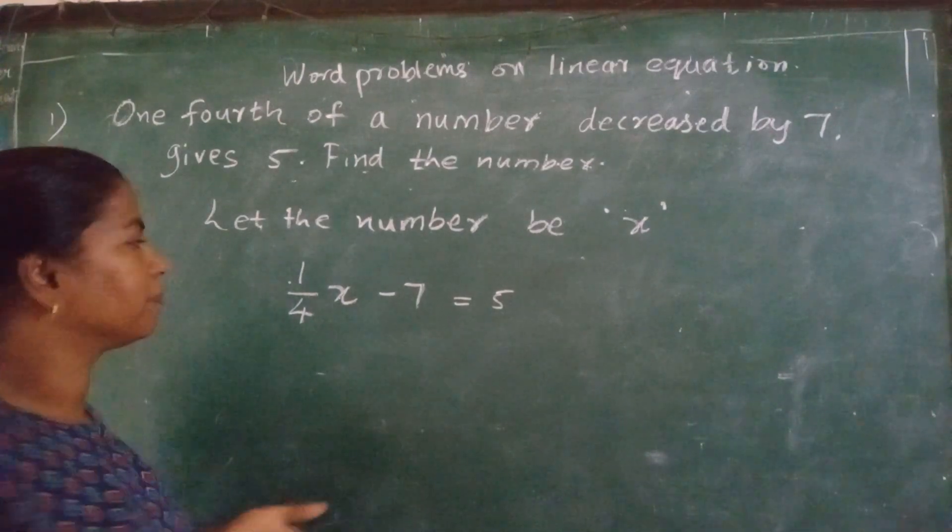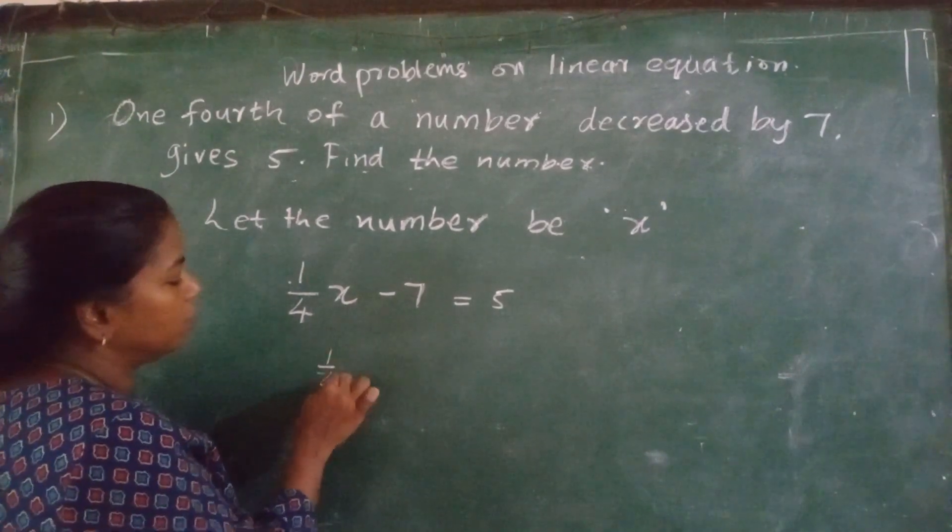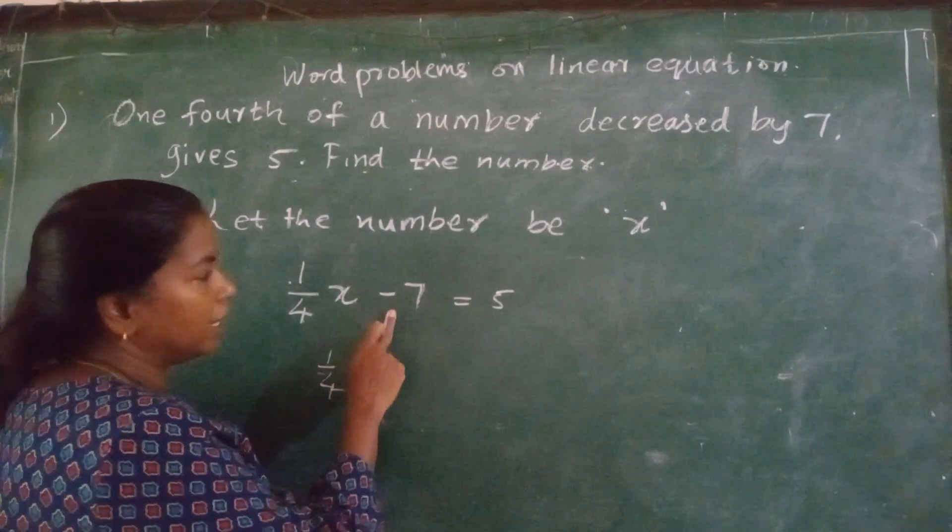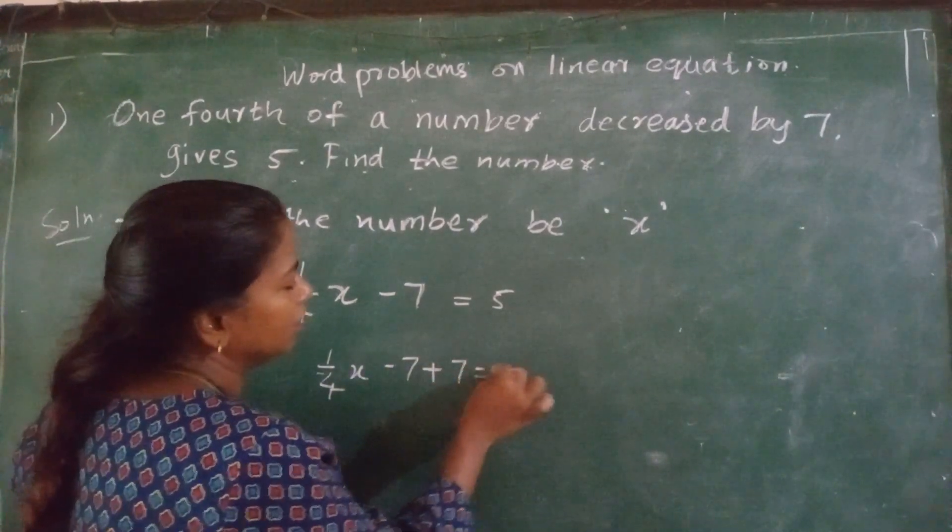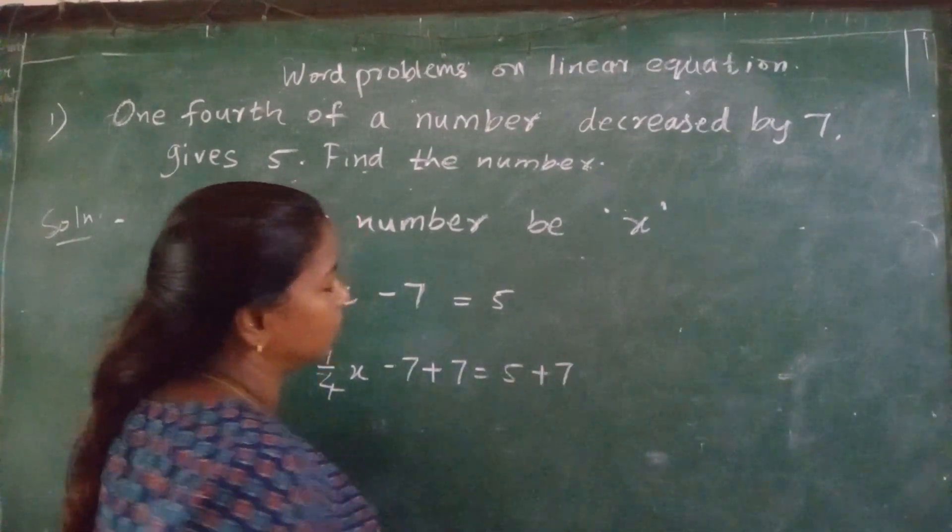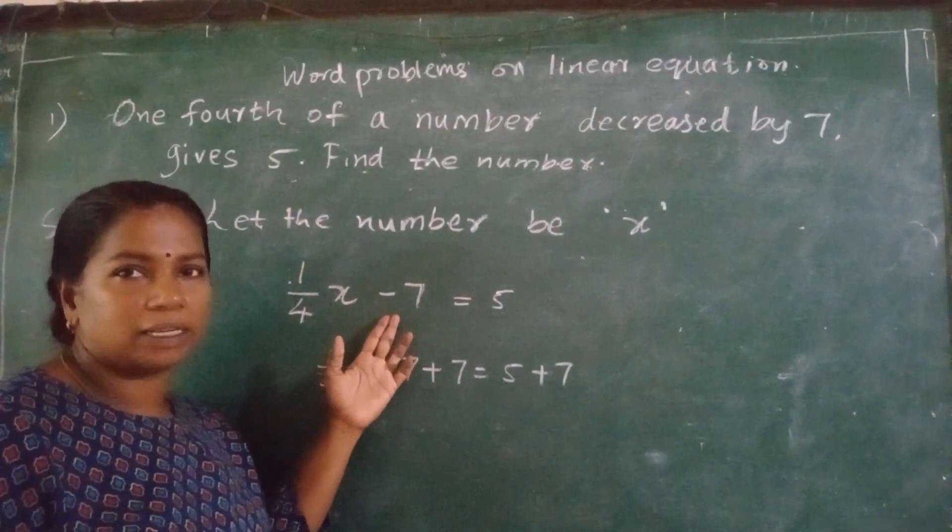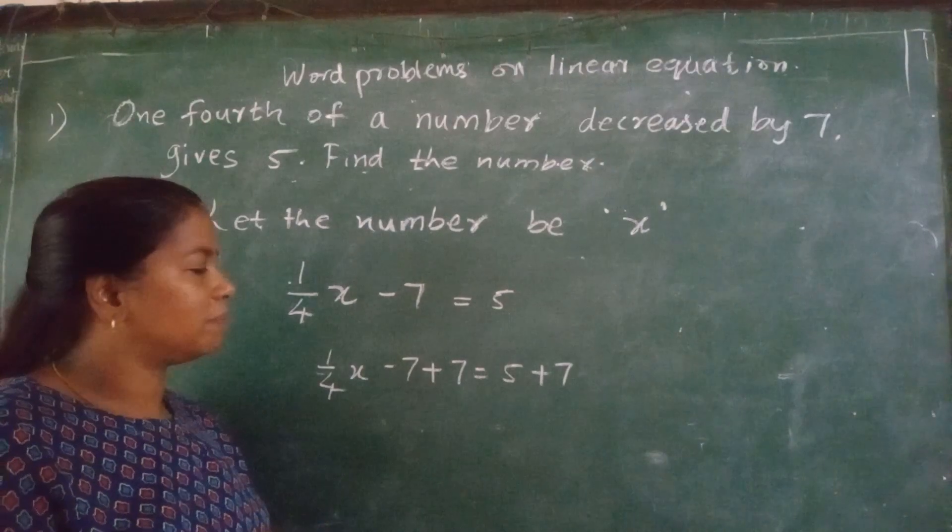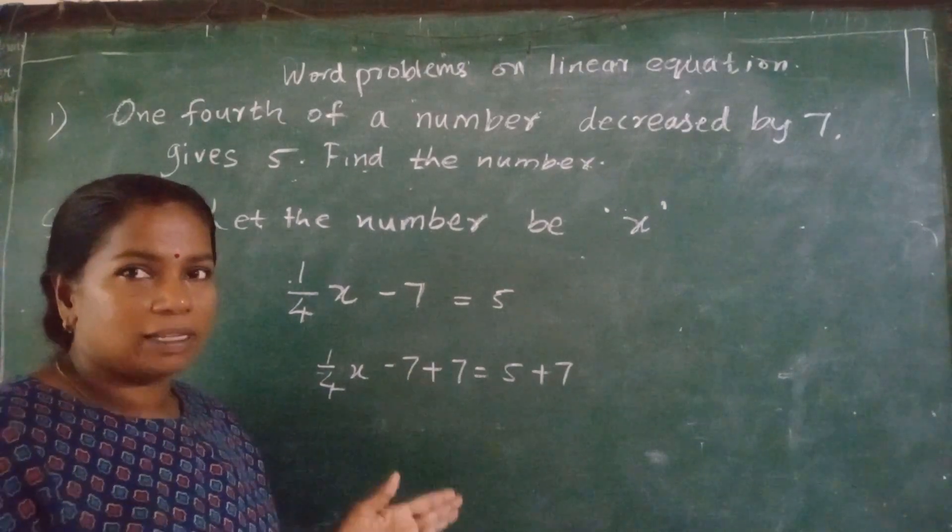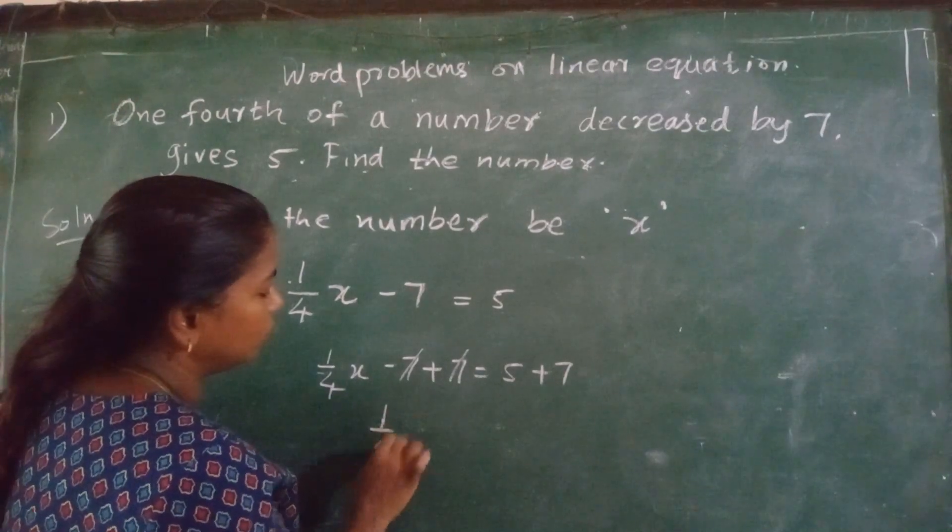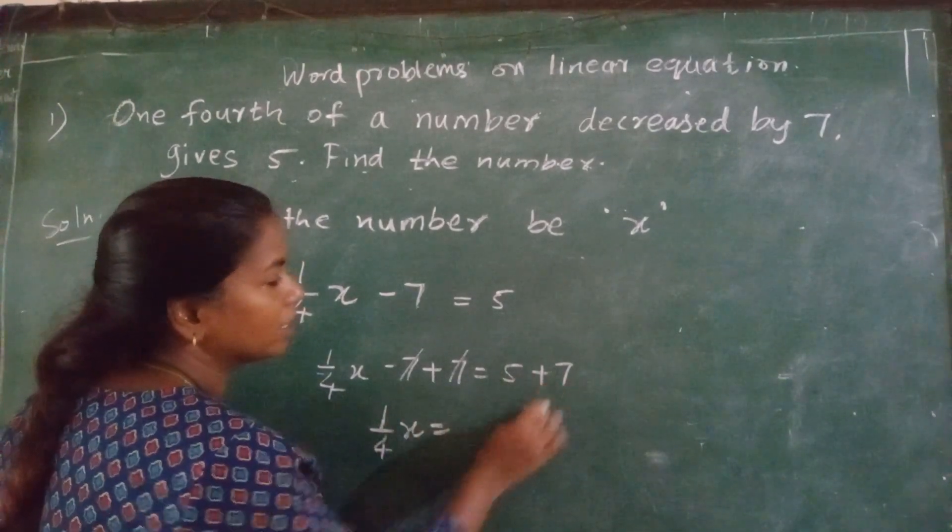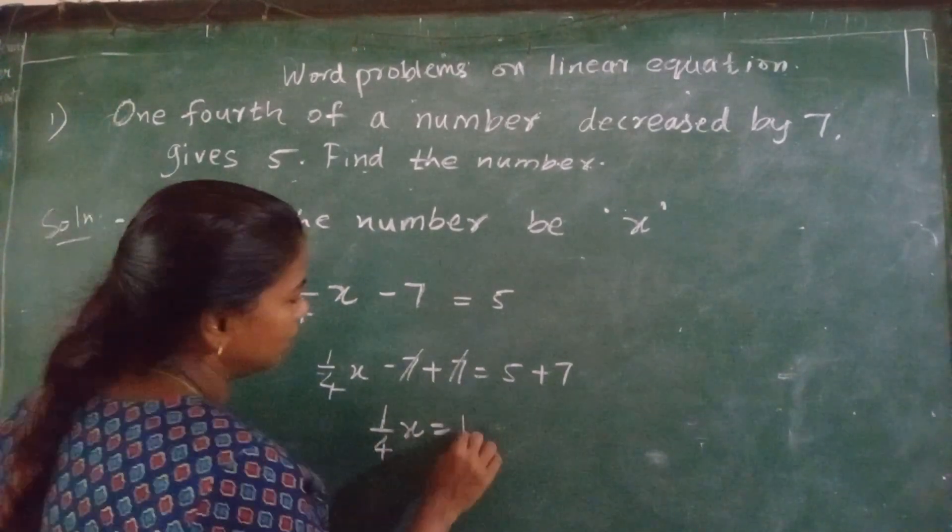Now one-fourth, 1 upon 4, X, minus 7, plus 7, 5 plus 7. Here it is minus 7. Opposite of that is plus 7. Adding 7 on both the sides. Cancel. Cancel. One-fourth X is equal to 5 plus 7. How much? 12. Very good.